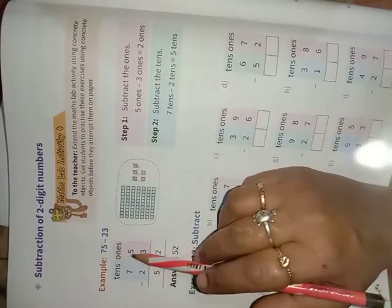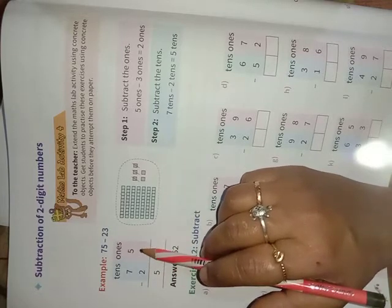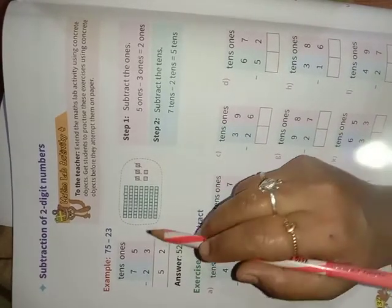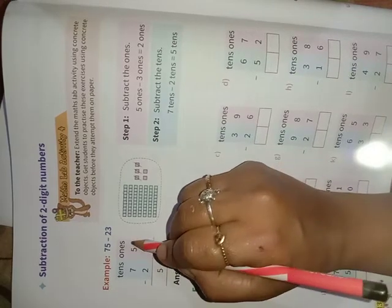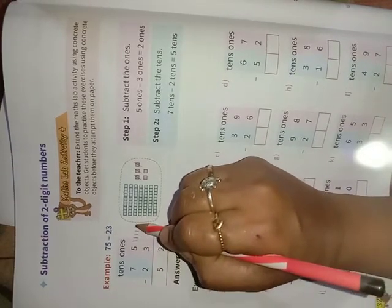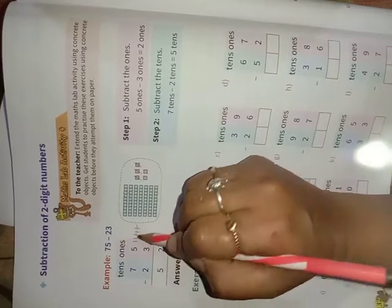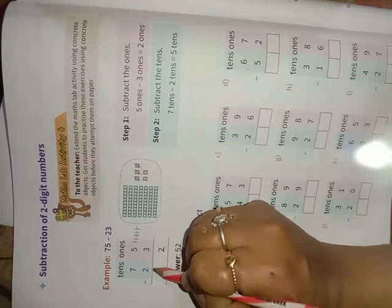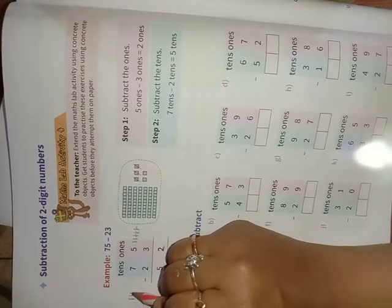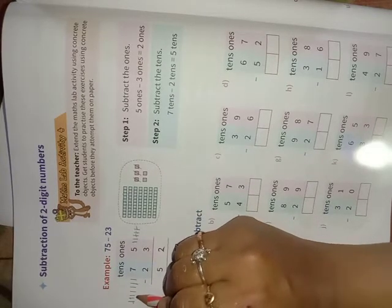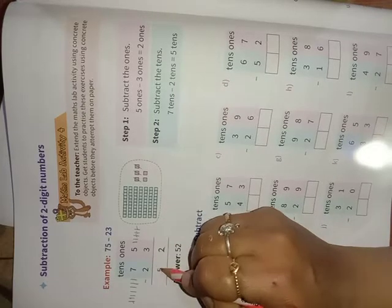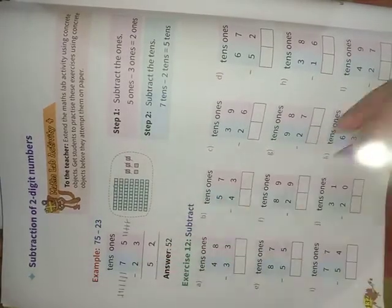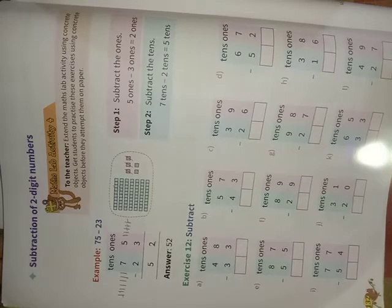First you have to subtract the ones, whatever is there in the ones place, the right side you have to subtract first, then you have to subtract the tens. Example: now see 5 minus 3, so the value is 5: 1, 2, 3, 4, 5. How many are we taking out? 1, 2, 3, so the value is 2. You can see here 2 has come. In the same way, 7 minus 2. If it is difficult for you to subtract, then you can draw the line: 1, 2, 3, 4, 5, 6, 7. How many do I have to take away? 2, so 1, 2. Count the remaining: 1, 2, 3, 4, 5, so the value is 5. So 75 minus 23 is 52 children.